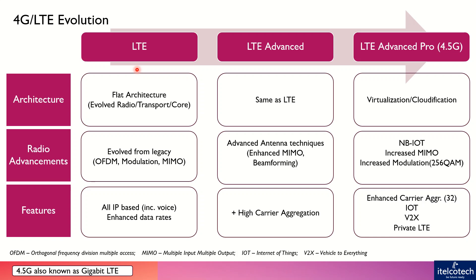Hi. Now we have seen there are different releases or advancements that are happening by the 3GPP for different technologies. In LTE we have seen from release 8 up till release 14 there are different advancements that have happened. Now we have divided these into three parts: LTE, LTE Advanced, and LTE Advanced Pro, which is also termed as 4.5G.